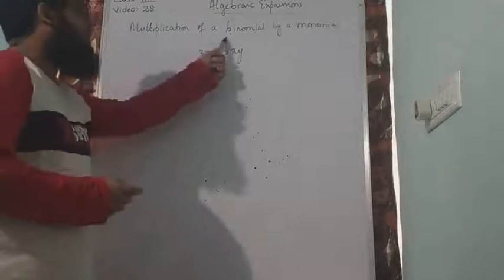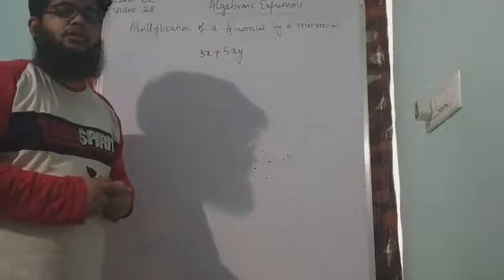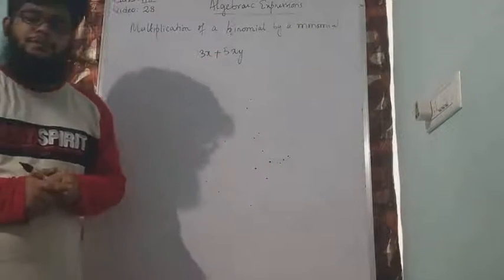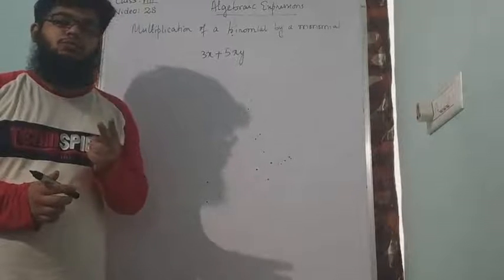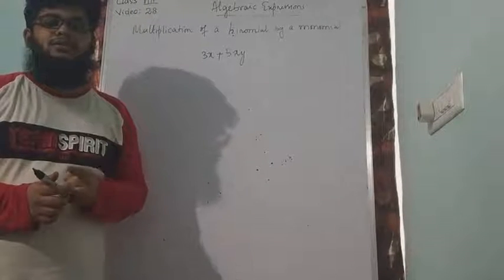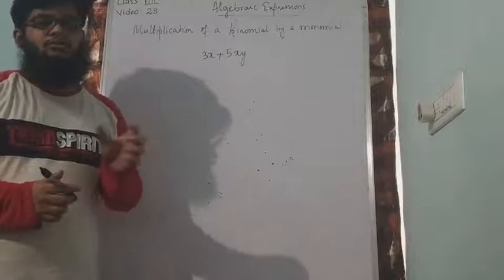In today's class, because we will be learning binomial with monomial, let us recall the definitions of binomial and monomial first. Binomial is an algebraic expression that consists of two terms and monomial consists of one term. So I should multiply two terms with one term.